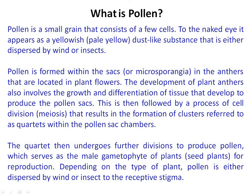The tetrads then undergo further division to produce pollen, which serves as the male gametophyte of plants in the case of seed plants for reproduction. Depending upon the type of plant, the pollen is either dispersed by wind or insect to the respective stigma. Thus, the pollen grains present inside the anther lobe of the stamen are the male reproductive unit of a flower.